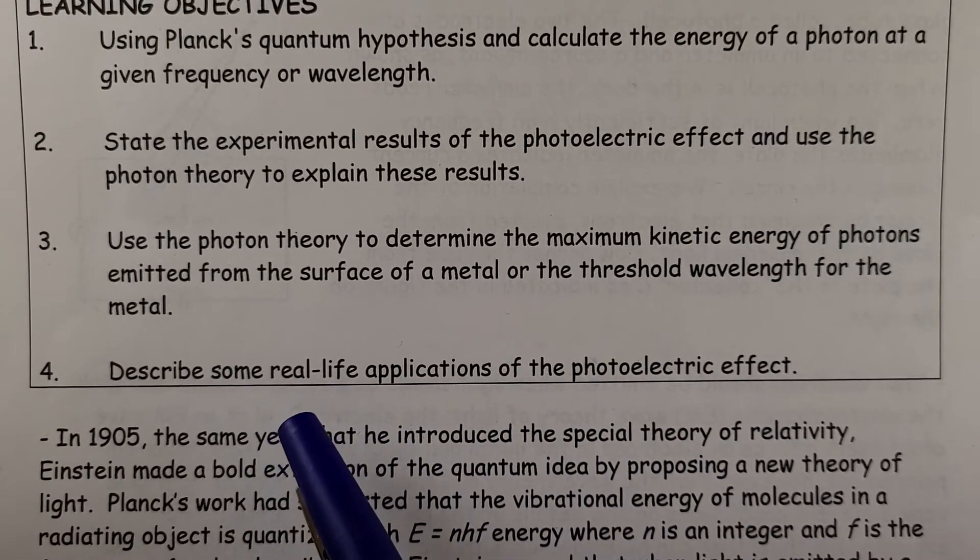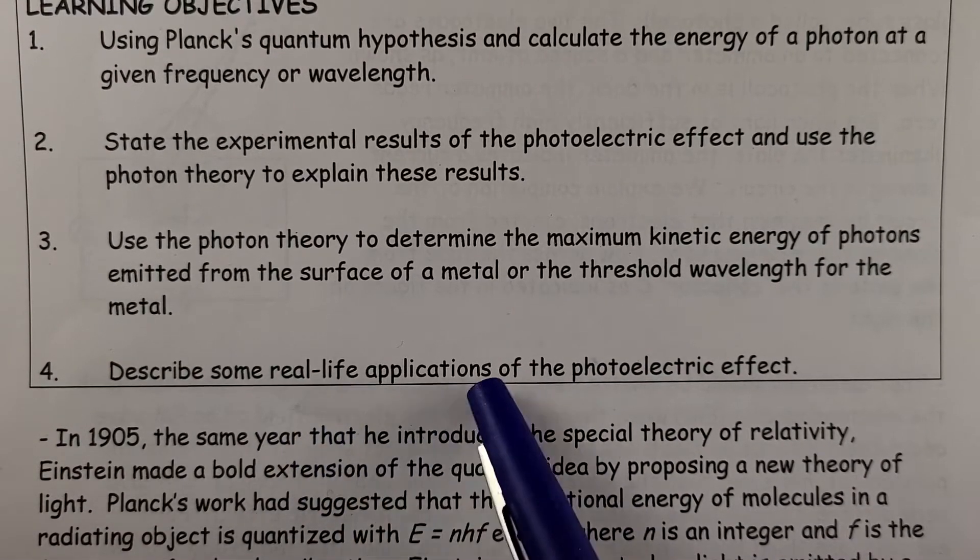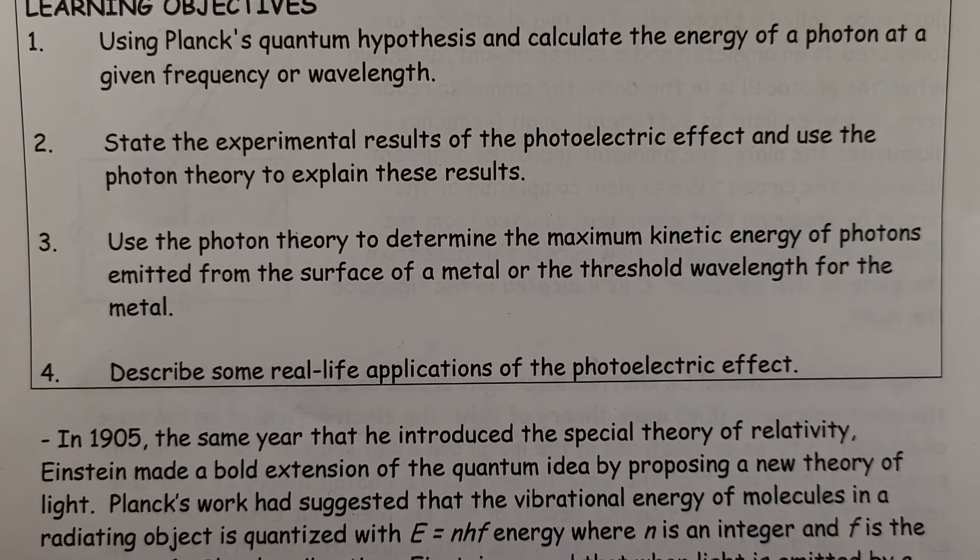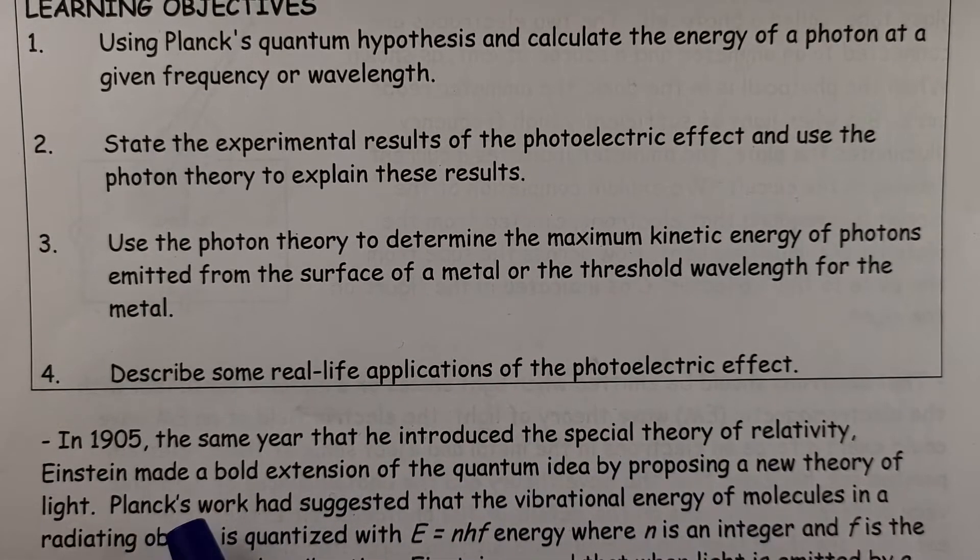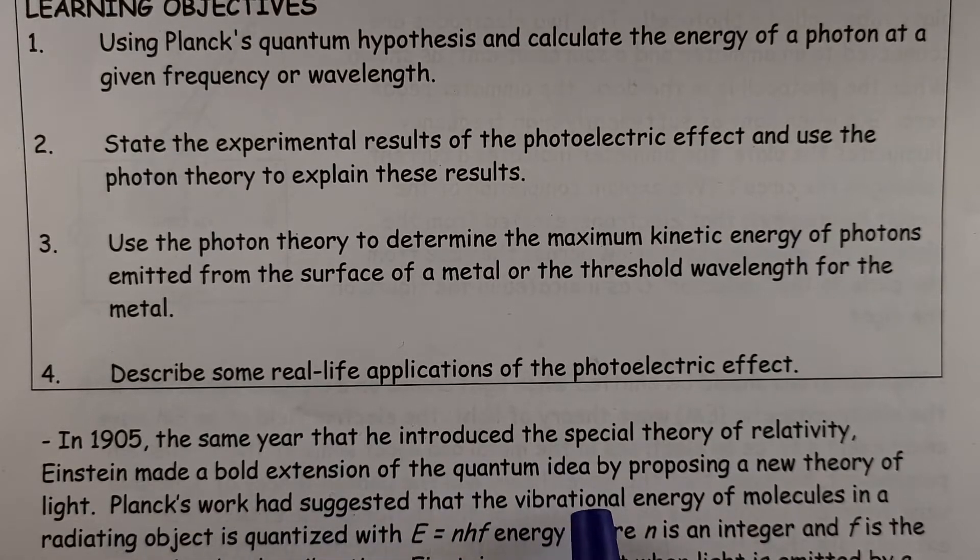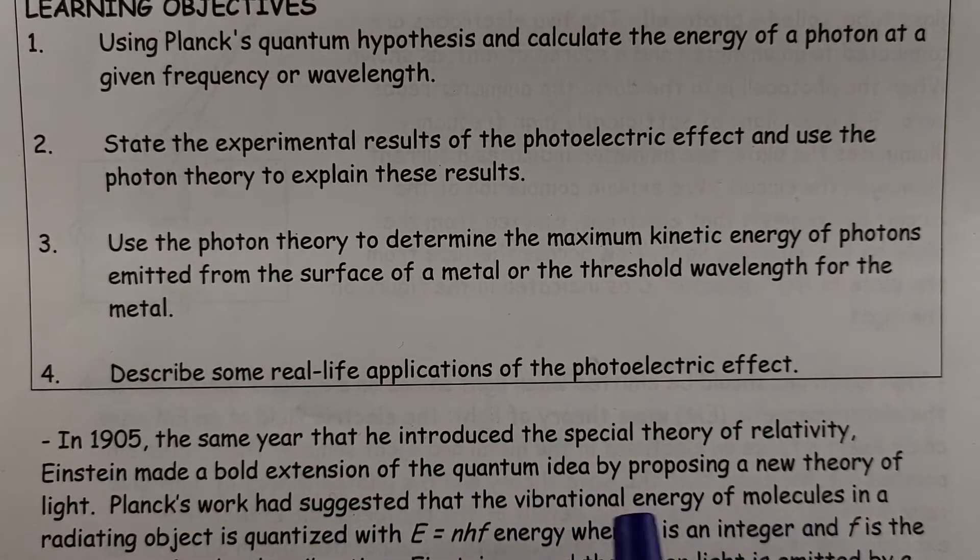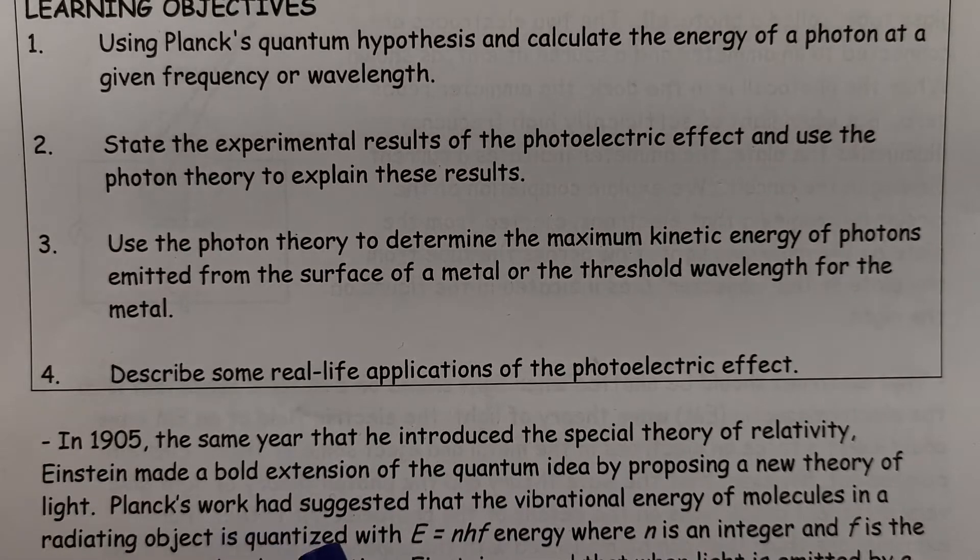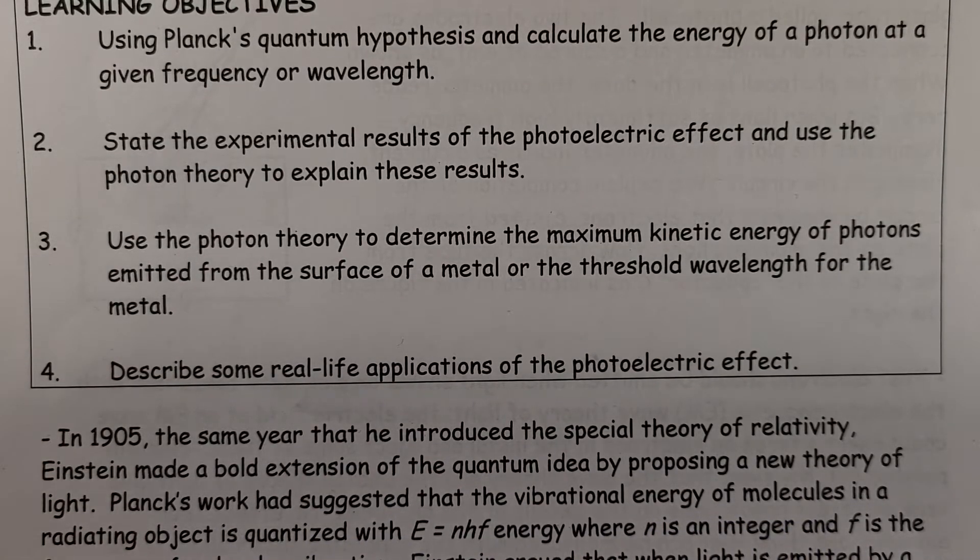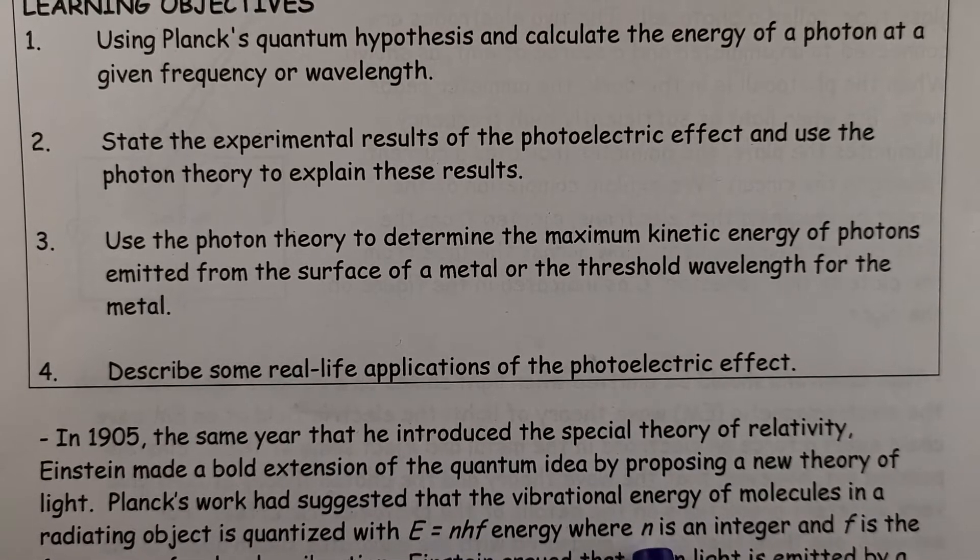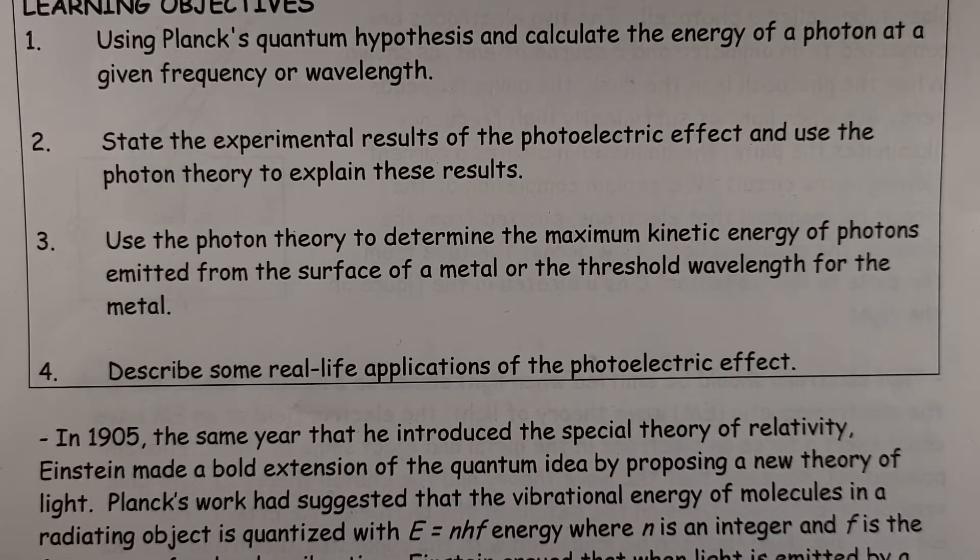And discuss some real-life applications of the photoelectric effect. So in 1905, the same year that he introduced the Special Theory of Relativity, Einstein made a bold extension of the quantum idea by proposing a new theory of light. Planck's work had suggested that the vibrational energy of molecules in a radiating object is quantized, so like in a light source, with E equals NHF, where N is an integer and F is the frequency of the molecular vibration.